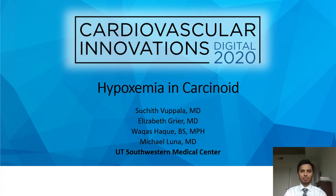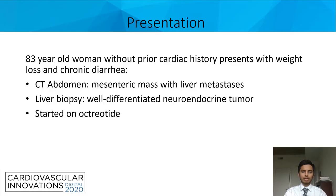Hi everyone, my name is Sucheth Vupala. I'm an internal medicine resident at UT Southwestern, and I'll be talking about hypoxemia in carcinoid. The case revolves around an 83-year-old woman without prior cardiac history, presenting with weight loss and chronic diarrhea. She had a CT abdomen done which showed a mesenteric mass with some liver mets, and a subsequent biopsy revealed a well-differentiated neuroendocrine tumor. She was started on octreotide at that time.